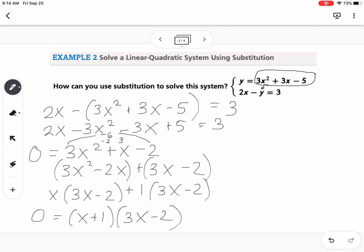So then my factors would be x plus 1 and 3x minus 2. So now what I have to understand is those are my factors, not my solutions. So then that would mean x equals negative 1 and x equals positive 2 thirds.